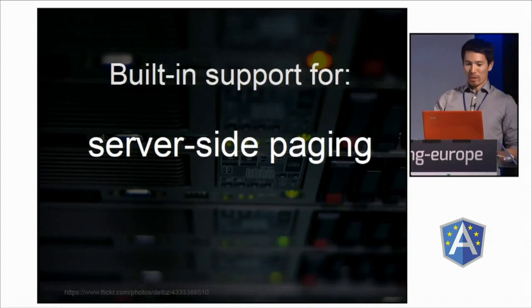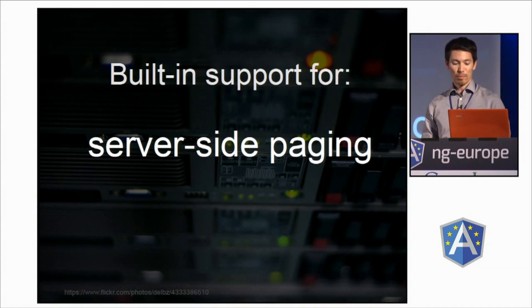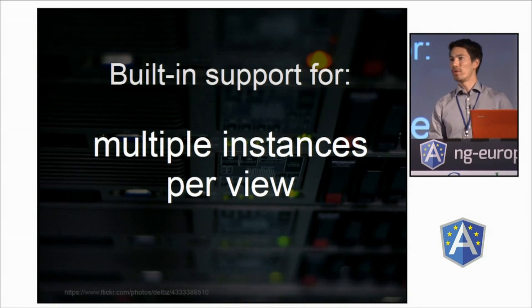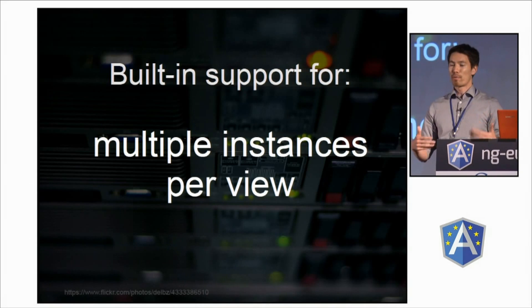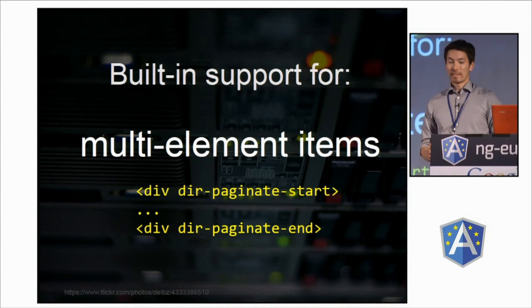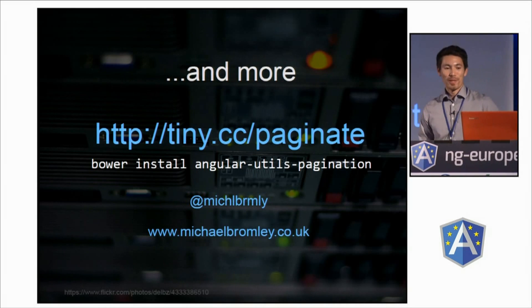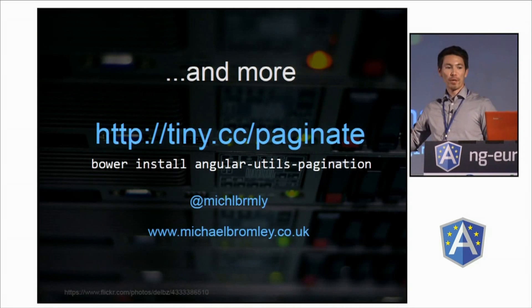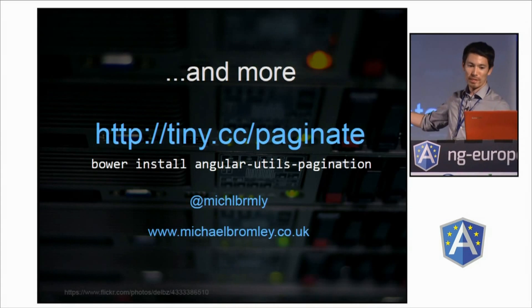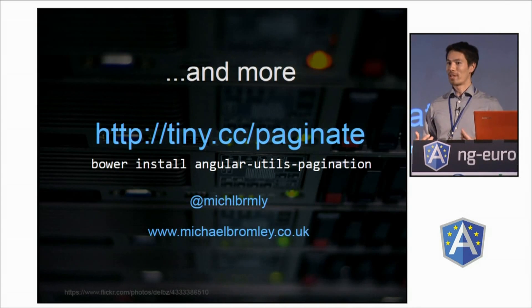Okay, maybe I exaggerated — you don't become a godlike super being with this. But it will save you some time if you use it. It's well tested and comes with a bunch of useful features. It supports server-side paging for those times when you have tens of thousands or hundreds of thousands of items in your collection and you don't necessarily want to do them all in memory. You can have multiple instances in your view, and they'll all operate independently of one another. It supports multi-element items, just like ng-repeat start and end — you can use it the same way if you wanted to output two table rows per item, and much more. Check it out — this shortened link will take you to the GitHub repo. You can install it via Bower with the command angular-utils-pagination. I invite you to try it out in your current or next project. I hope it saves you some time and makes your life as an Angular developer even easier.